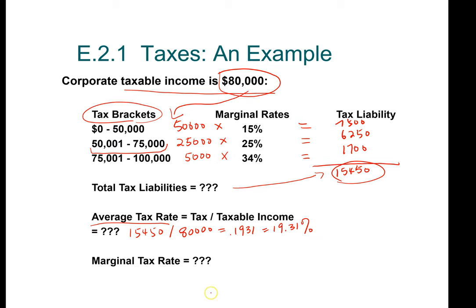Lastly, we want to look at the marginal tax rate. Remember, the marginal tax rate applies to the next dollar of income. So if we earn $80,001, that additional $1 falls into the 34% tax bracket, meaning our marginal tax rate is 34%. To find the marginal tax rate, look at the tax table. To find the average tax rate, compute the tax liability and divide it by the taxable income. This concludes our discussion on taxes.